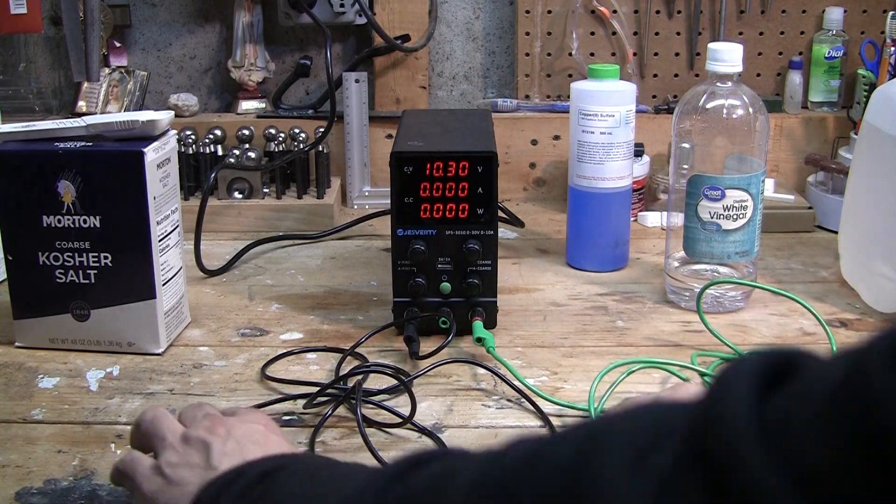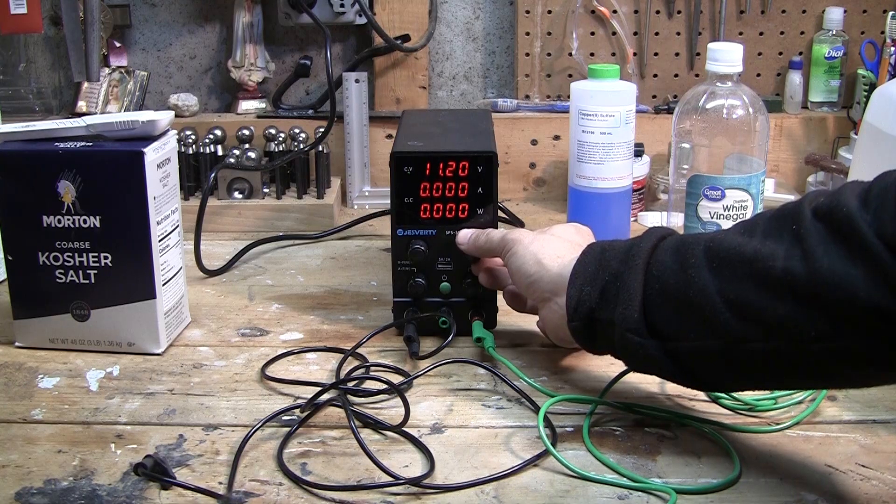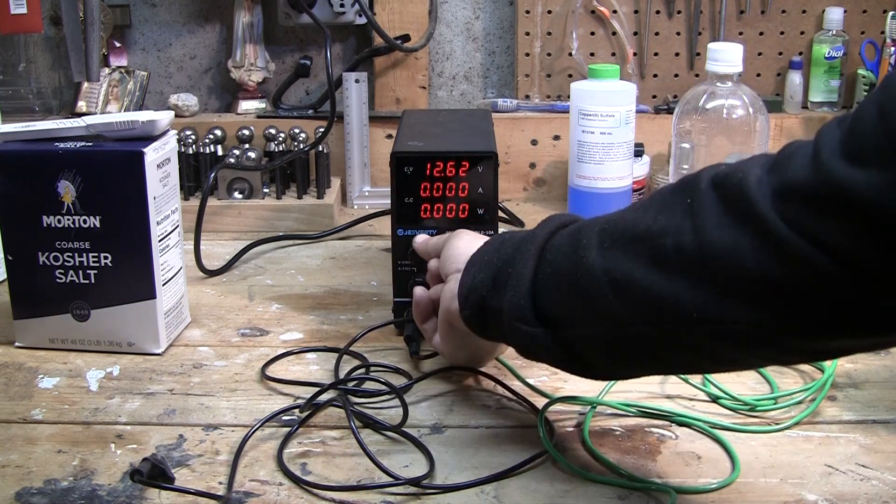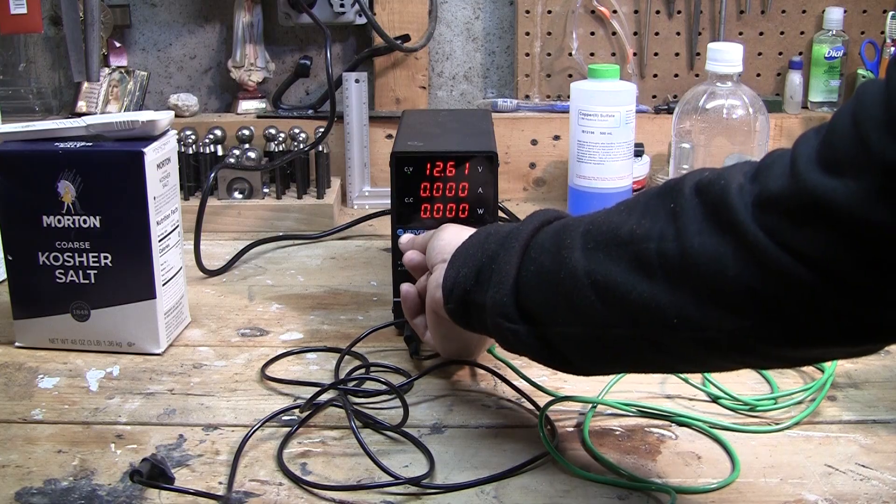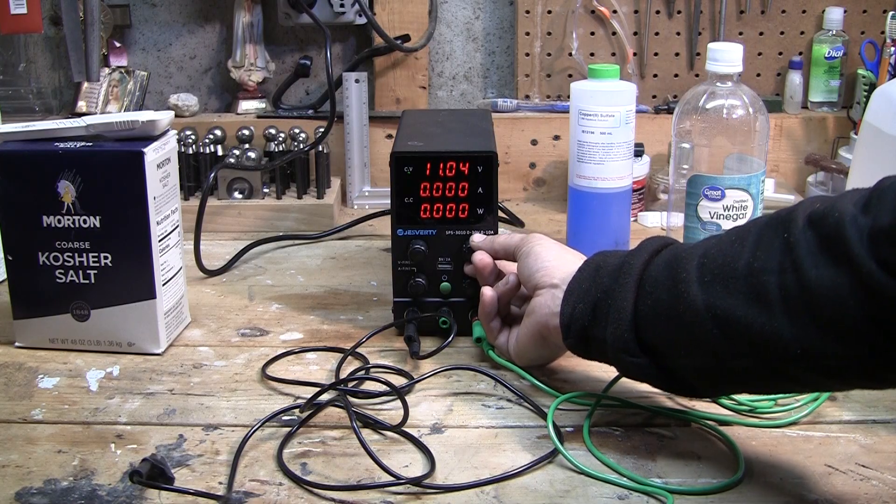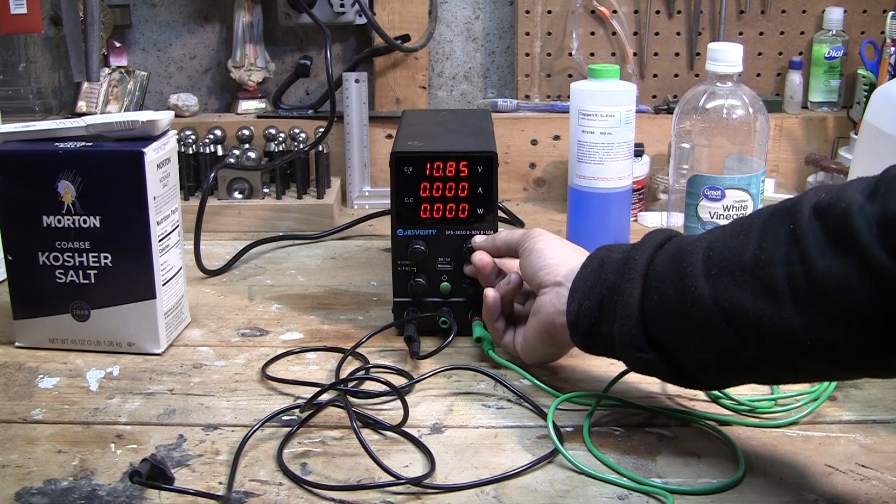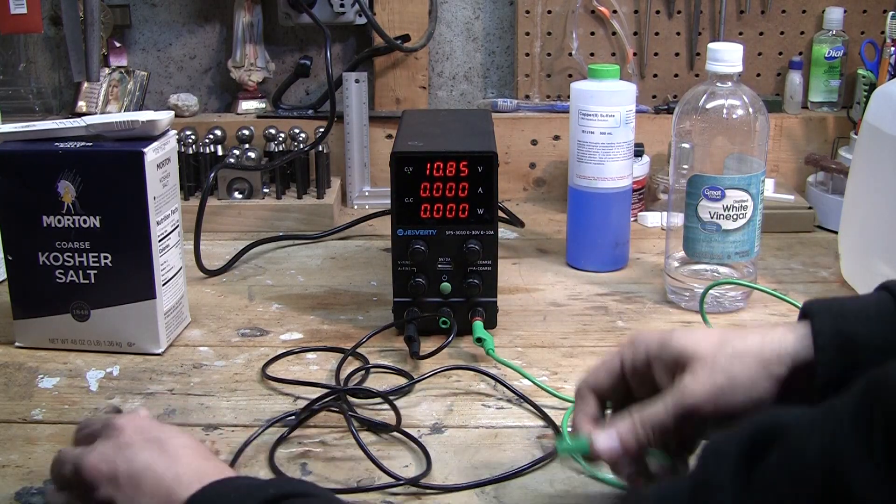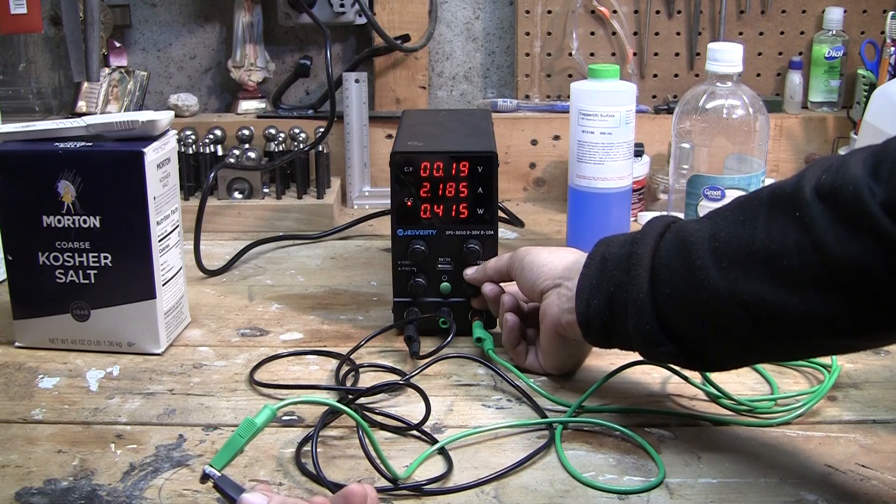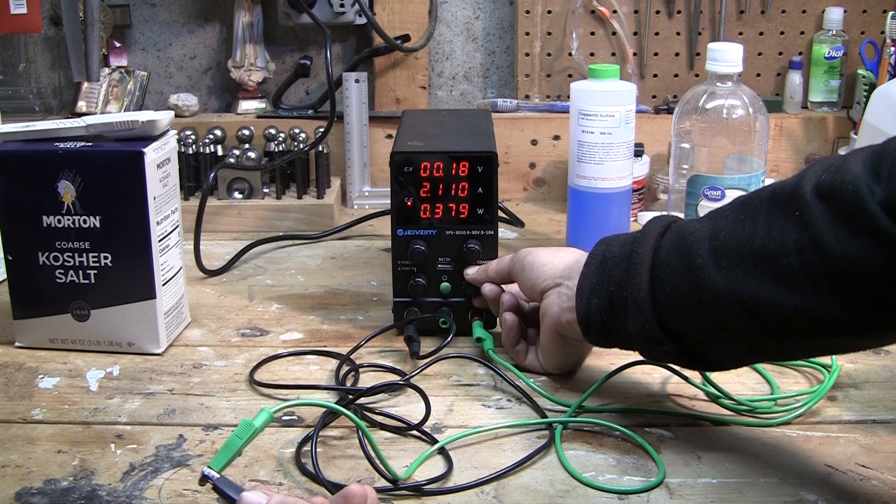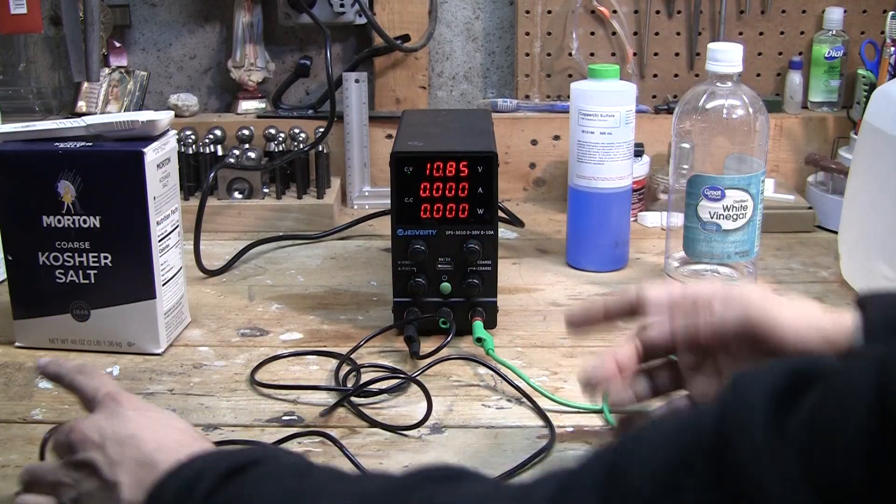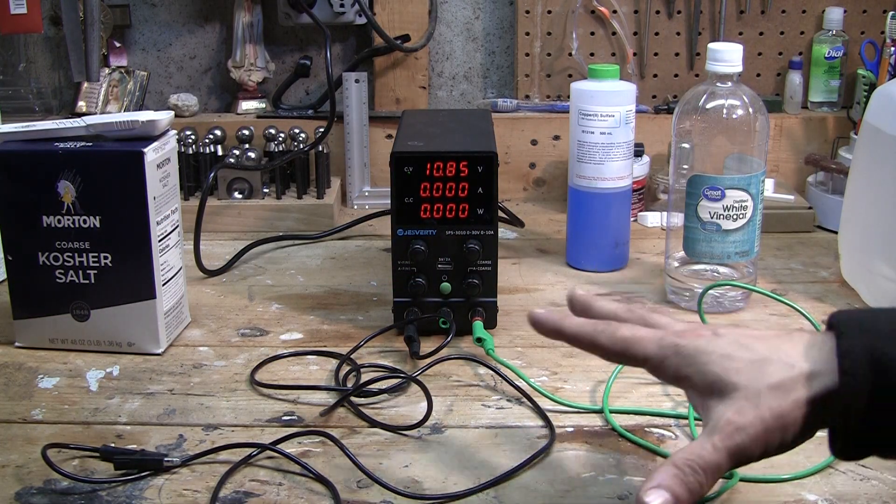All right, so now we got the power supply. We got our little alligator clips here. And you can see we have it set. We're setting the voltage right now. You got the coarse and then you got the fine adjustment. They're a little finicky, but overall for what it is, it works. I'm going to set this at close to 11 volts. And then to turn it on the amps, you just connect the alligator clips and then it turns off the volts, goes to the amps. I want to leave it at about two amps. And just disconnect it. Goes back to volts. And now it's all set up, ready to go.